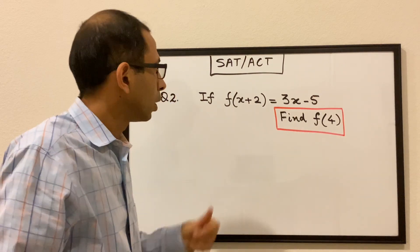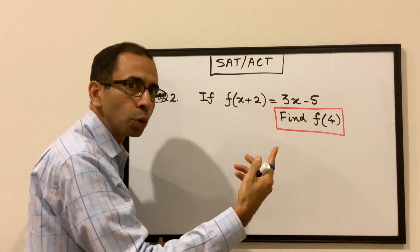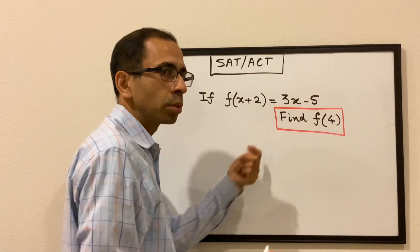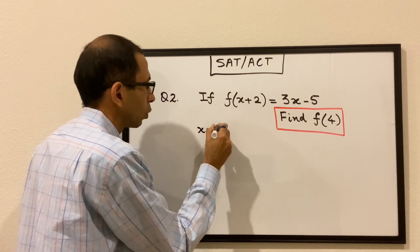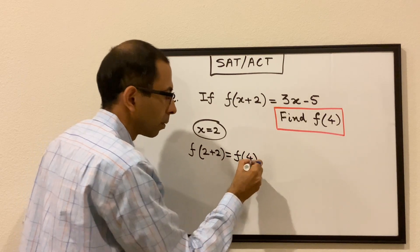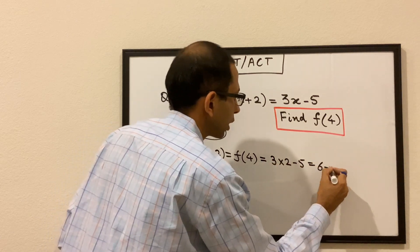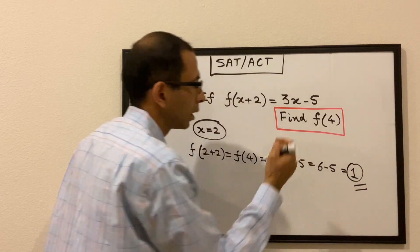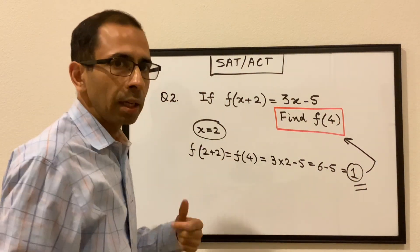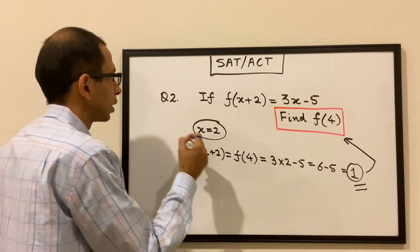We have to find f(4). One way — Method 1 — is to plug in x = 2, because when x = 2, the left side becomes f(2 + 2) = f(4), which is what we want. So the right side is 3 times 2 minus 5, which is 6 minus 5, which is 1. So f(4) = 1.